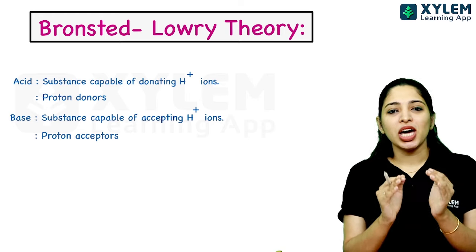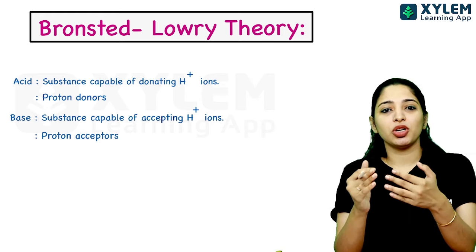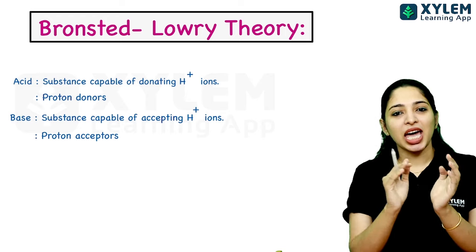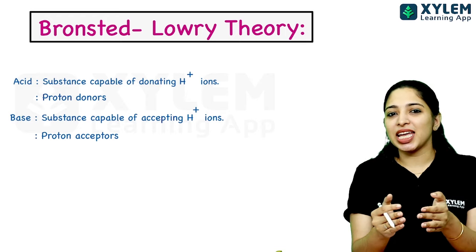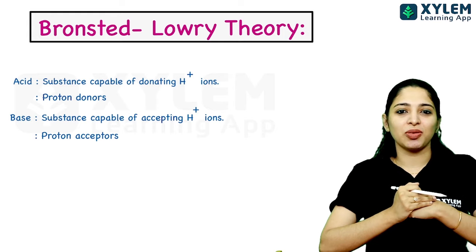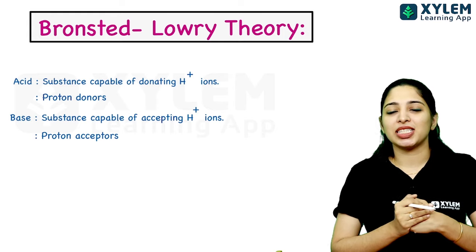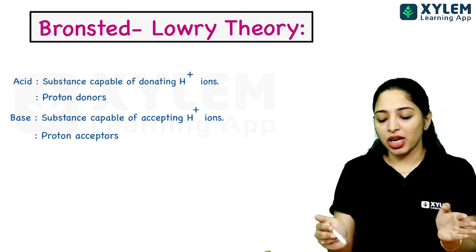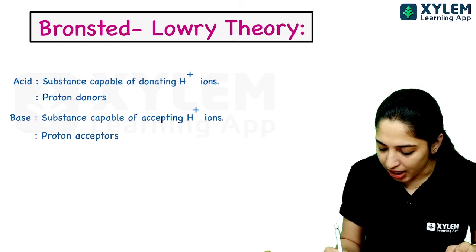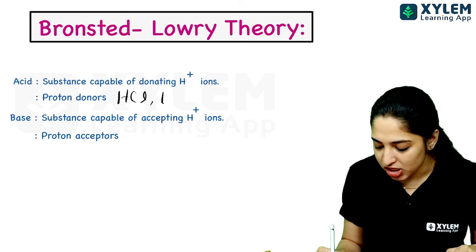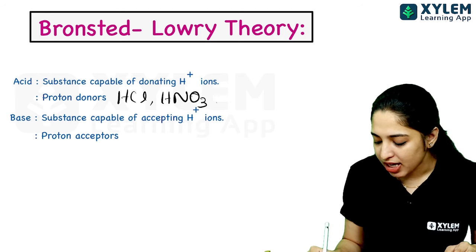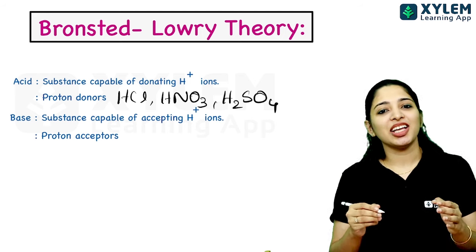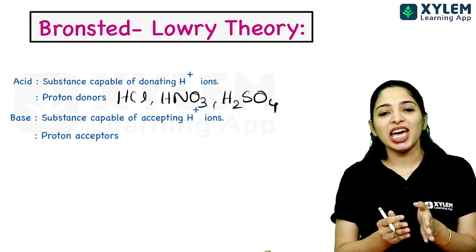The theory is that acids are proton donors — they donate H+. For example, HCl, HNO3, H2SO4 — these are proton donors. That is, they are also called acids.